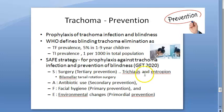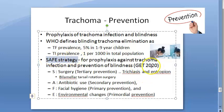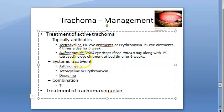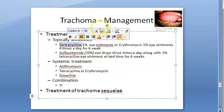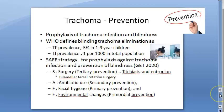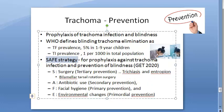Remember the key terms: SAFE strategy, GET 2020 — specific to trachoma. For treatment, remember at least these three antibiotics: tetracycline, erythromycin, and azithromycin. That is all for trachoma. Thank you so much.